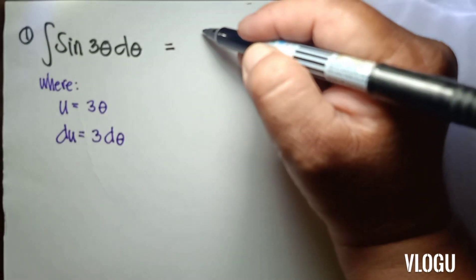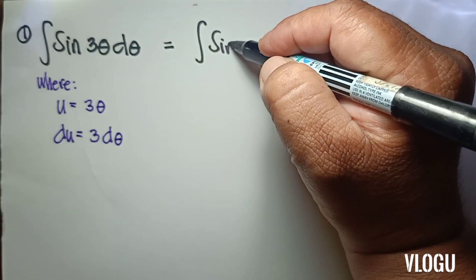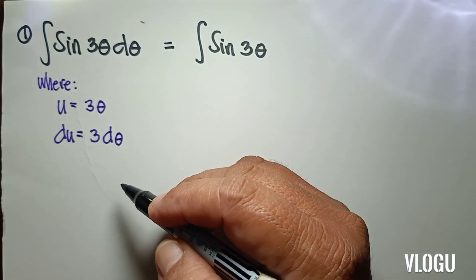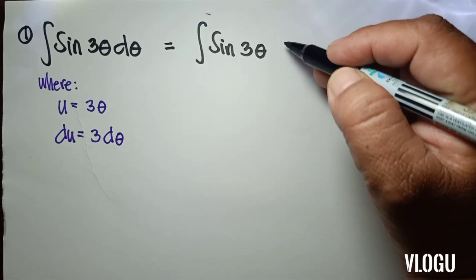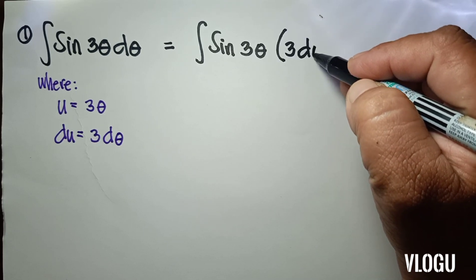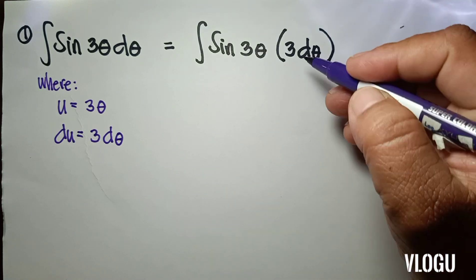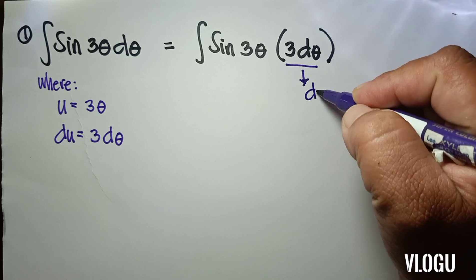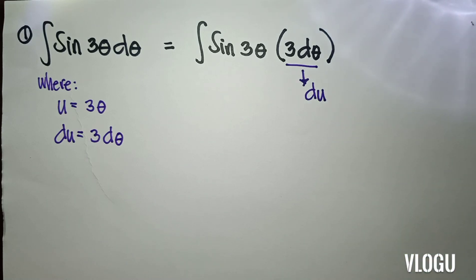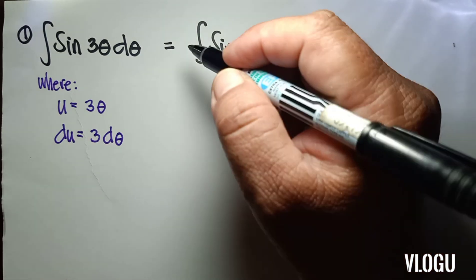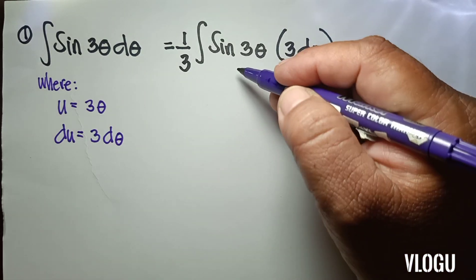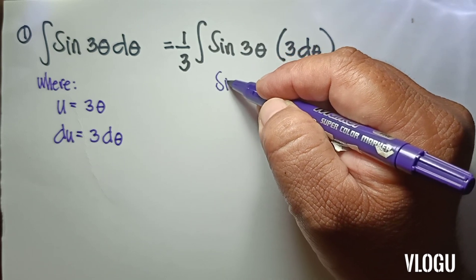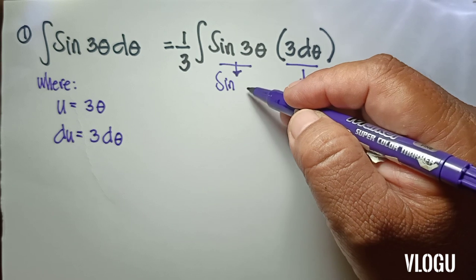We write the integral of sin(3θ) again, where our du is equivalent to 3 dθ. So we will have 3 dθ as our du. Since we multiply 3 here, we are going to multiply 1/3 outside. So we now have a complete form — this is our sin u.